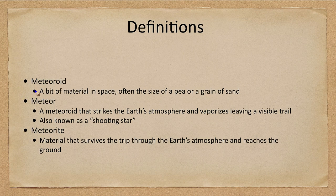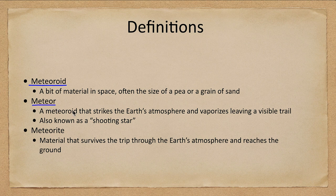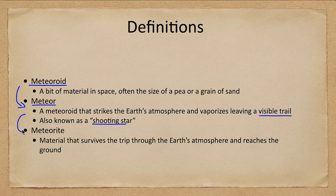Let's start with a few definitions. A meteoroid is a bit of material out in space, perhaps the size of a pea or a grain of sand — something relatively small. Meteors, also called shooting stars, are meteoroids that strike Earth's atmosphere and vaporize, leaving a visible trail. Meteorites are material that survives the trip through Earth's atmosphere to reach the ground.